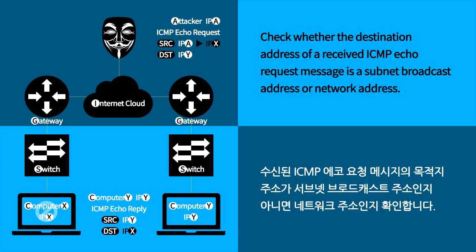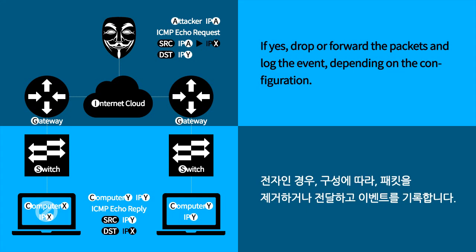To mitigate smurf attacks, check whether the destination address of a received ICMP echo request message is a subnet broadcast address or network address. If yes, drop or forward the packets and log the event, depending on the configuration.